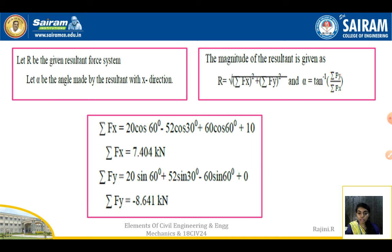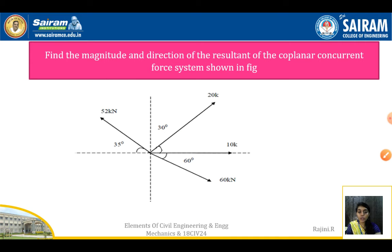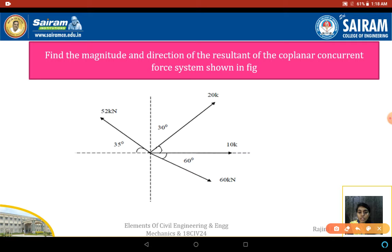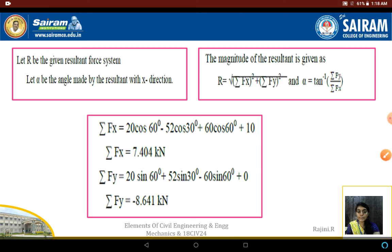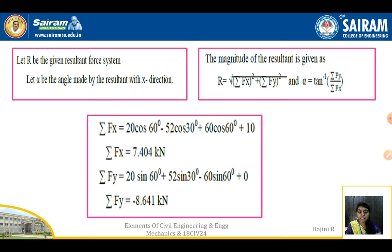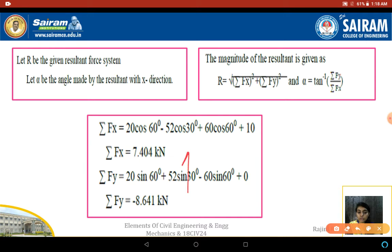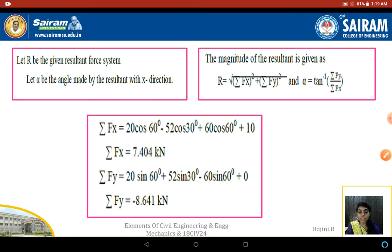Next, for ΣFy, we have three vertical force components — from 20 kN, 52 kN, and 60 kN. Two forces are upward (positive) and one is downward (negative). So ΣFy = 20 sin 60° + 52 sin 30° − 60 sin 60°, giving ΣFy = −8.641 kN.